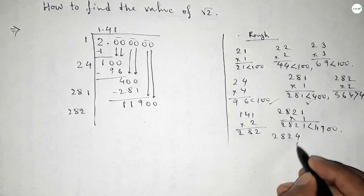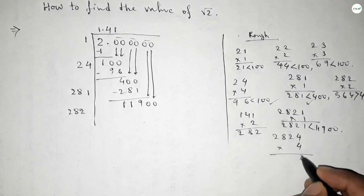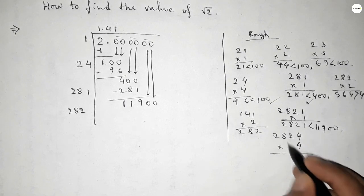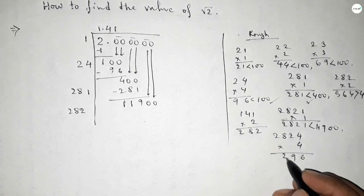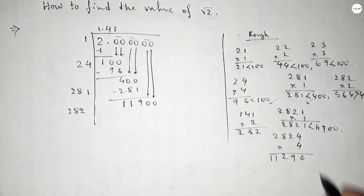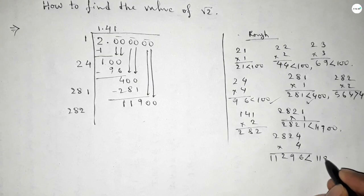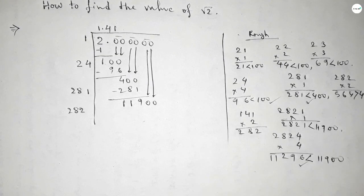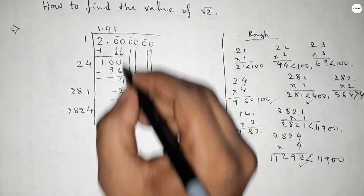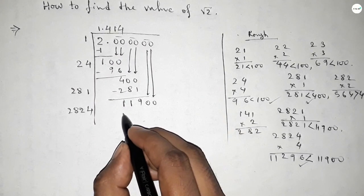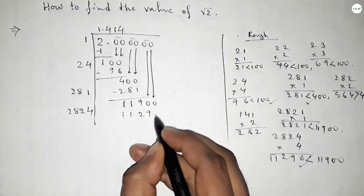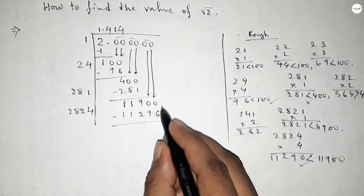If you put here 4, then this is almost near to 11900. So we can take here 4. So this is 11296.